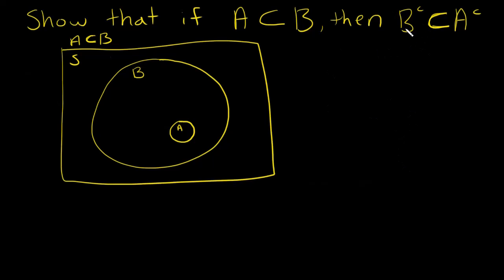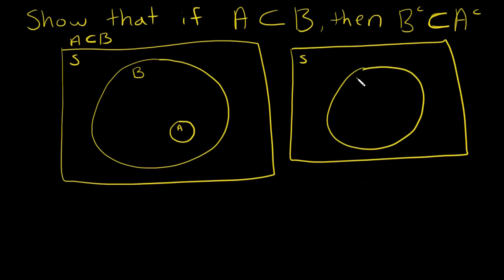So then let's talk about what B complement looks like. I'm going to draw the same thing. So this is my sample space and B is still here and A is still here. Now where is B complement?